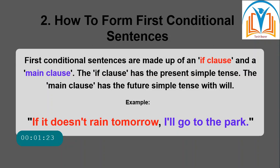Next, how to form first conditional sentences. First conditional sentences are made up of an if clause and a main clause. The if clause has the present simple tense; the main clause has the future simple tense with 'will'. For example: 'If it doesn't rain tomorrow, I will go to the park.'